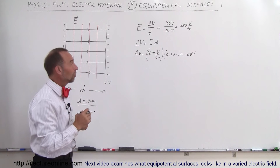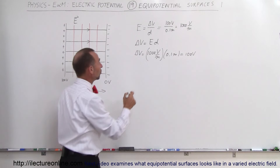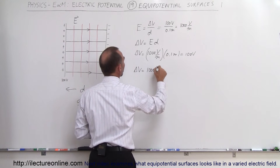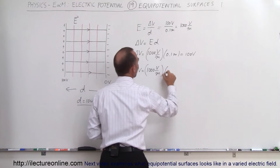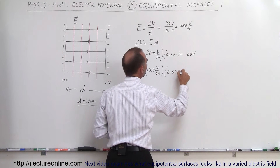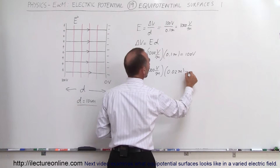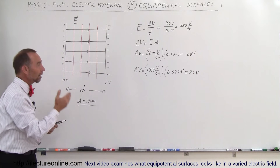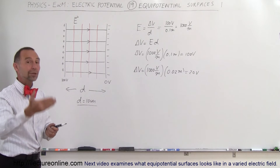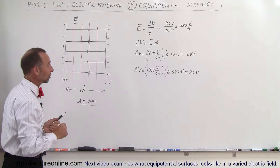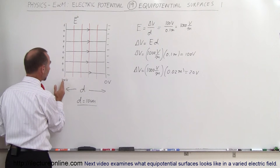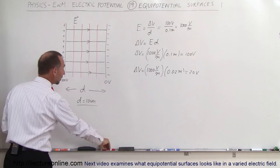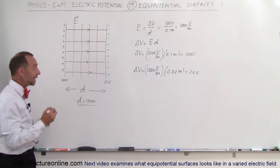This also means that if you travel a shorter distance — let's say only 2 centimeters — the delta V would be equal to 1,000 volts per meter times 0.02 meters, in other words 2 centimeters, and that would only be 20 volts. So if you go from here and travel 2 centimeters, the potential at that location would only be 80 volts.